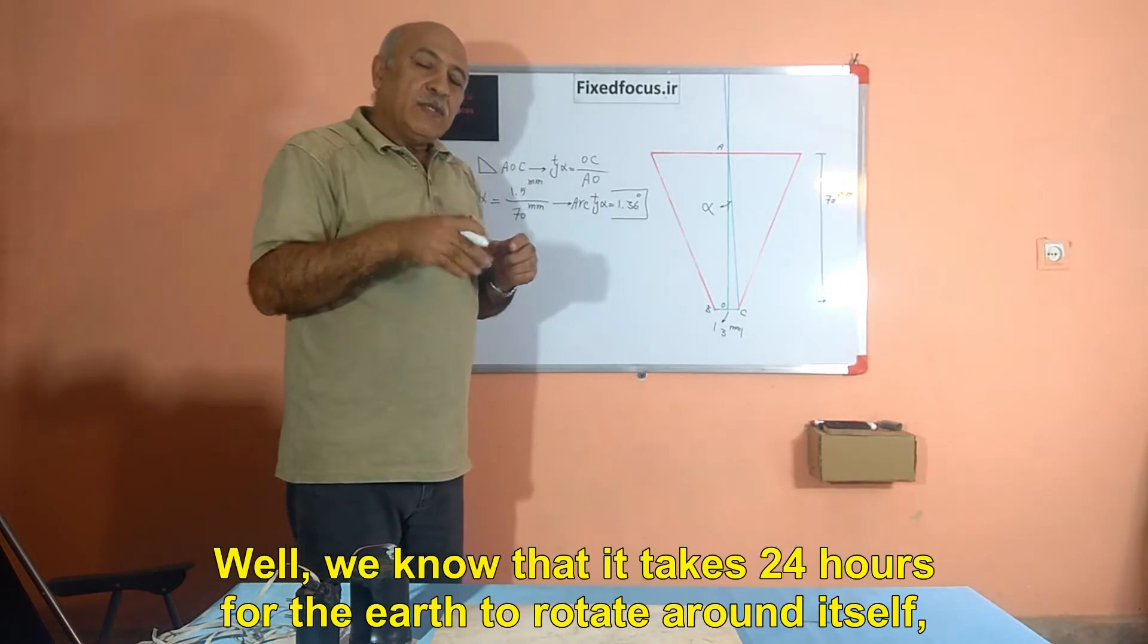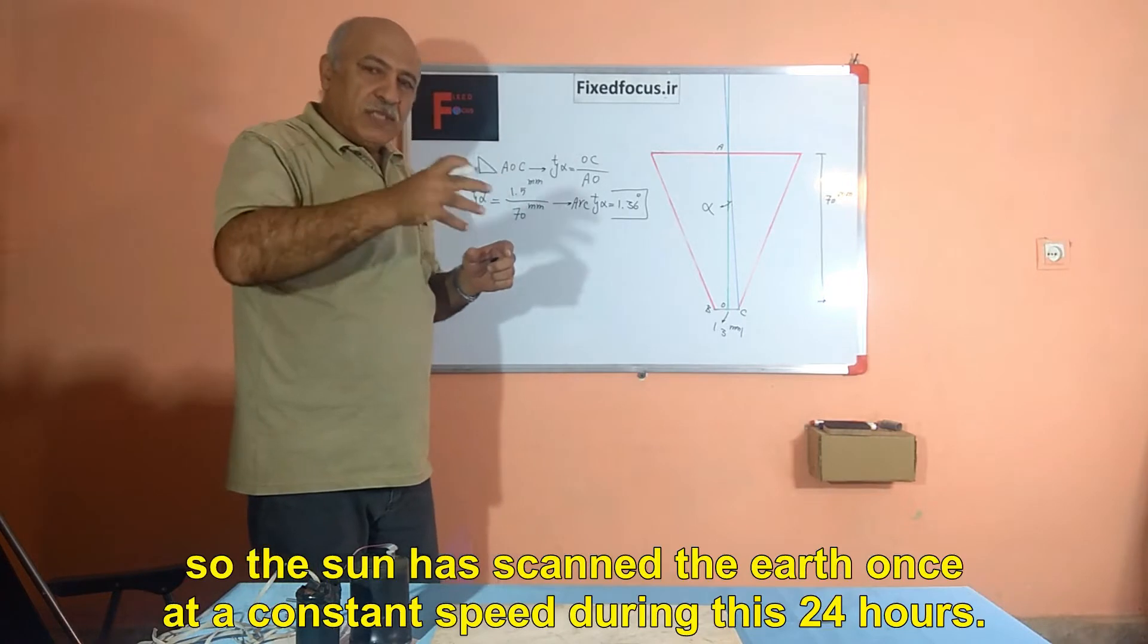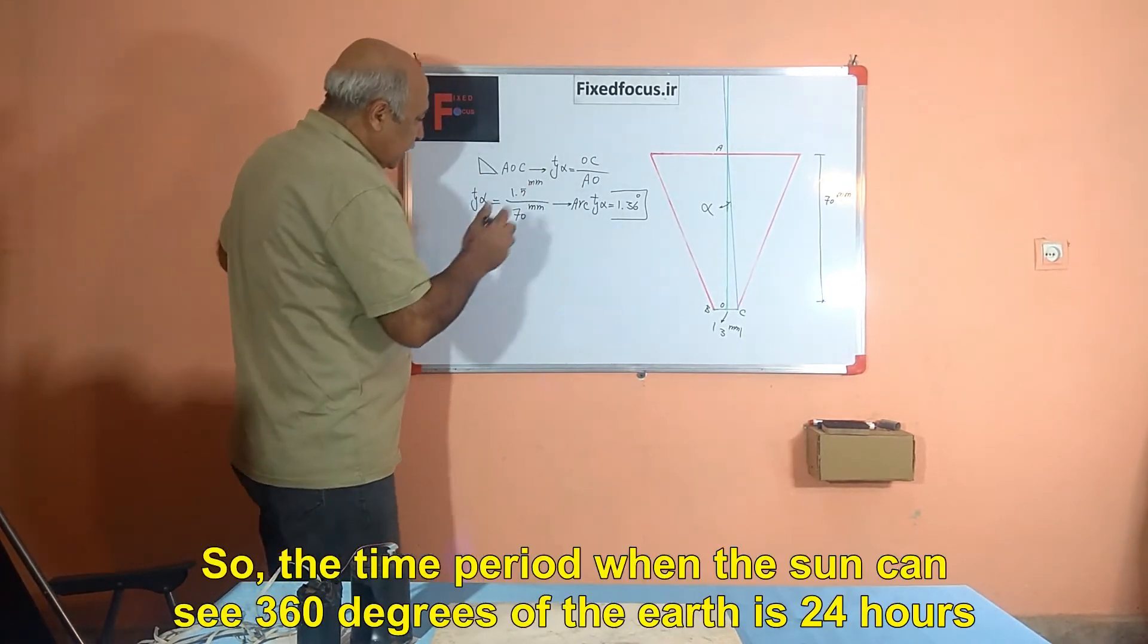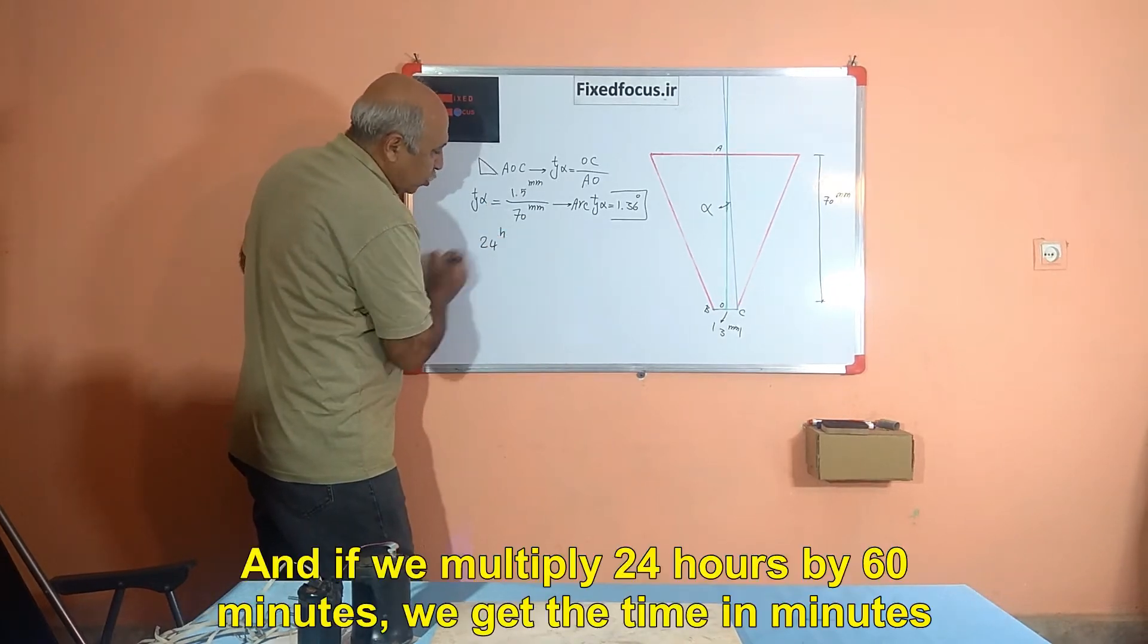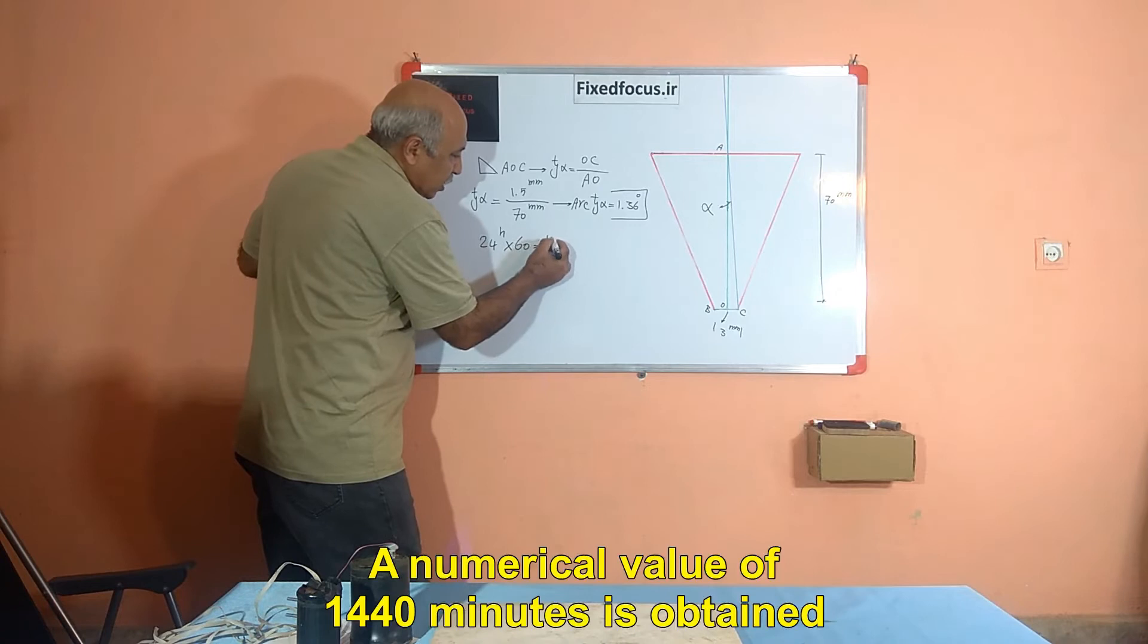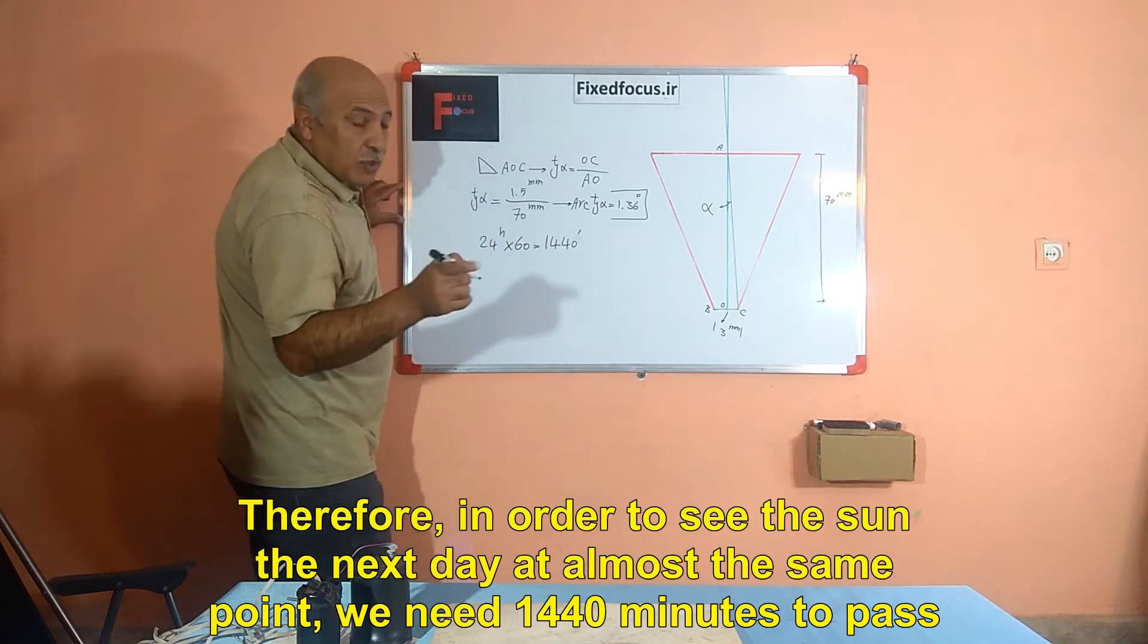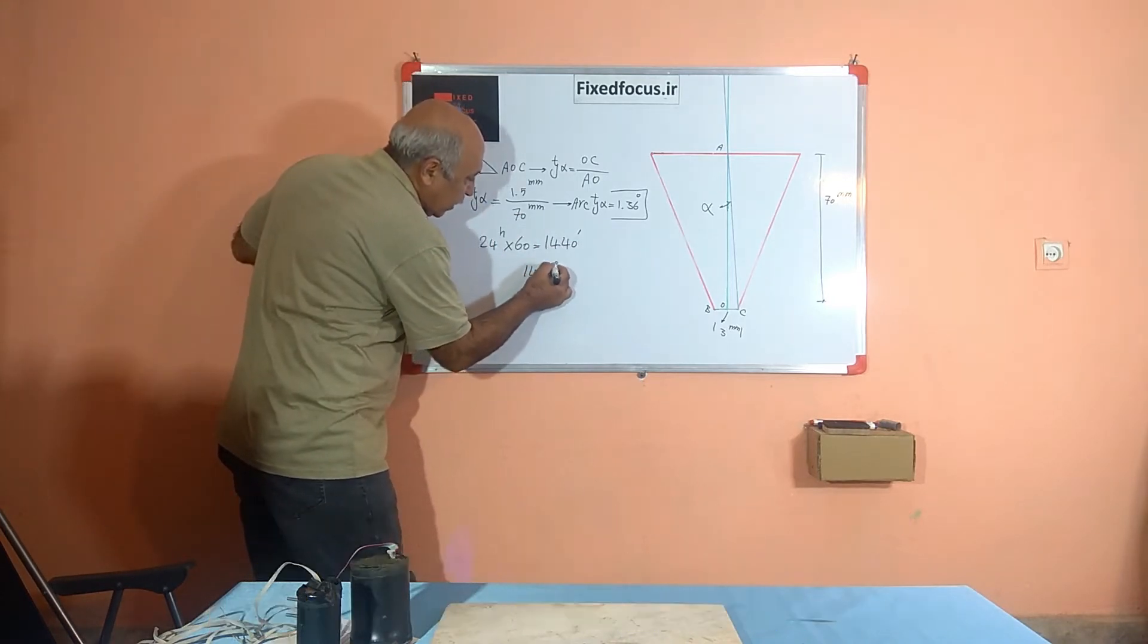Well, we know that it takes 24 hours for the earth to rotate around itself, so the sun has scanned the earth once at a constant speed during this 24 hours. So, the time period when the sun can see 360 degrees of the earth is 24 hours. And if we multiply 24 hours by 60 minutes, we get the time in minutes. A numerical value of 1,440 minutes is obtained. Therefore, in order to see the sun the next day at almost the same point, we need 1440 minutes to pass.